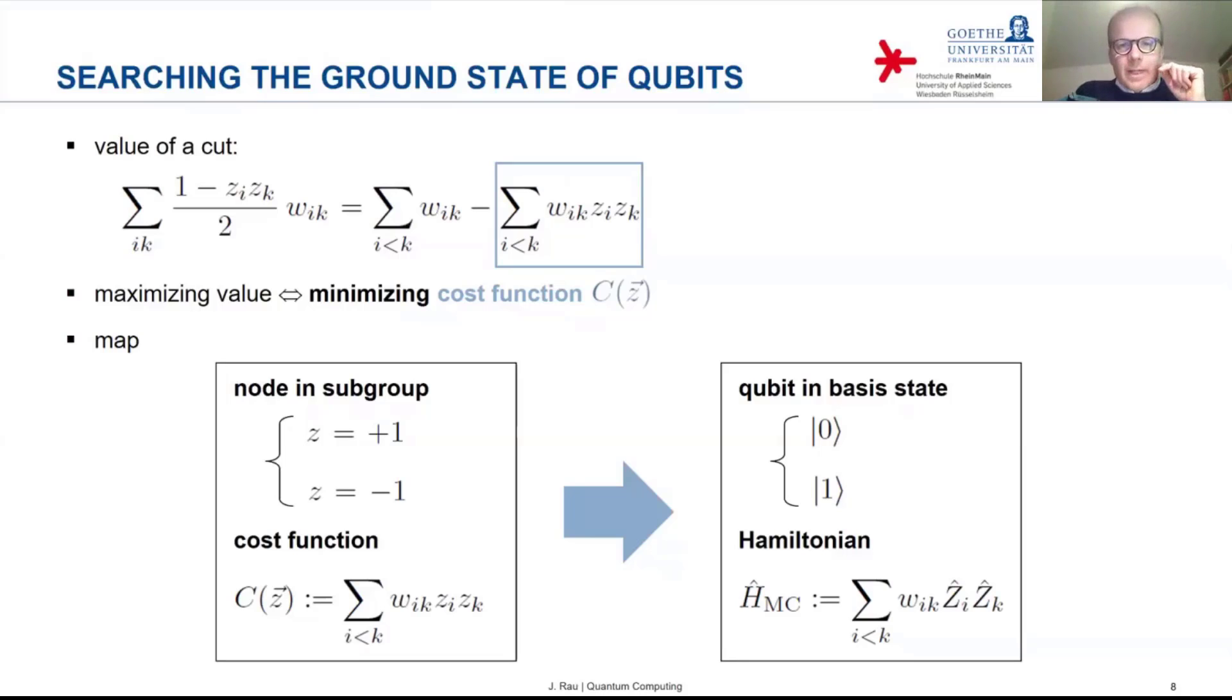Now, the classical optimization problem consists in finding that assignment of values to the variable z that minimizes the cost function. And this corresponds in the qubit case to finding that multi qubit basis state, which minimizes the energy. So which corresponds to the lowest possible eigenvalue of the Hamiltonian, and that is the ground state. So essentially we have mapped the problem of minimizing the cost function to a problem of minimizing the energy of the qubit state. And that means finding the ground state of this Hamiltonian.